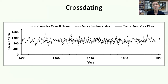Once analyzed, they revealed some interesting dates. This line graph displays the white pine master chronologies from the Council House and the Cabin. The solid line in the graph is a multi-site compilation of white pines from central New York State. The patterns in each chronology, with peaks at wide rings and valleys at narrow rings, generally follow one another and provide visual confirmation of the dating, with the Council House chronology stretching from 1675 to 1830 and the Nancy Jemison Cabin chronology from 1711 to 1806.